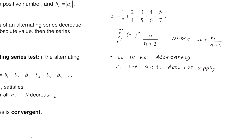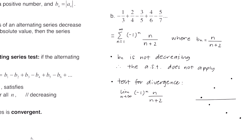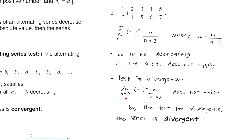When the alternating series test doesn't apply, we look at the test for divergence. We take the limit of negative 1 to the n times n over n plus 2. Since the terms do not decrease — they get bigger — and they're alternating from positive to negative, the limit of these terms does not exist. Therefore, by the test for divergence, the original series is divergent.